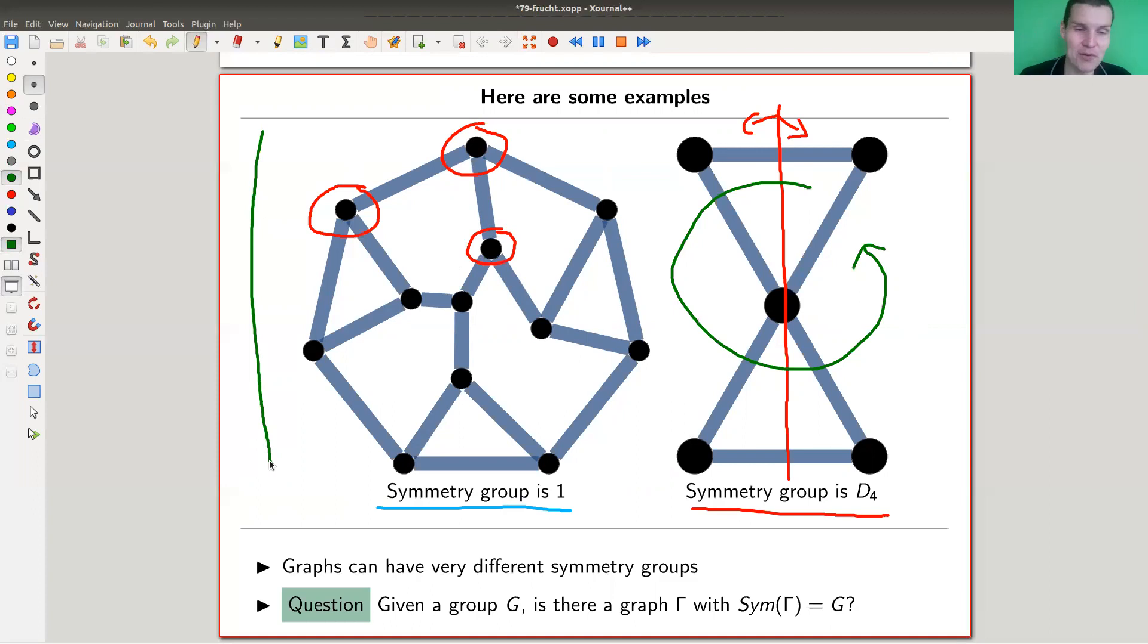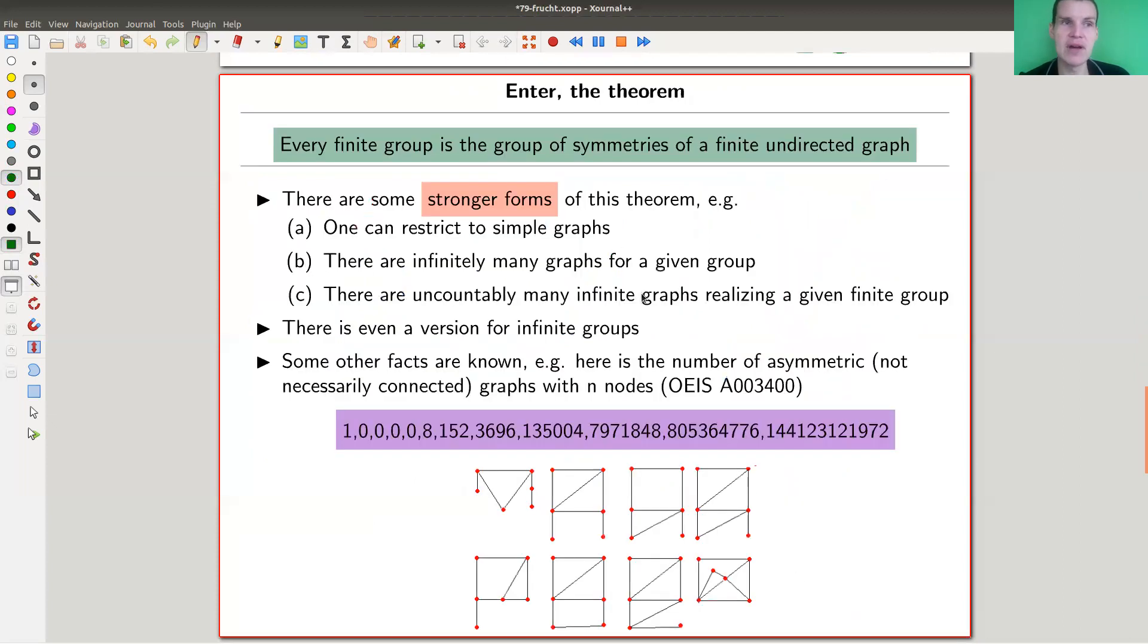Anyway, so this is usually a hard problem. And the question addressed is, can you realize a group with a one-dimensional geometric object that has a group as a symmetry group? In other words, can you find a graph associated to a group such that the symmetry group of the graph is G? And the answer to this question is given by Frucht's theorem, and yes, it's true in general.